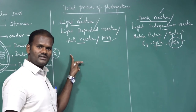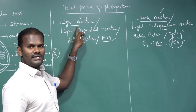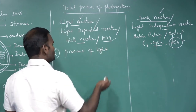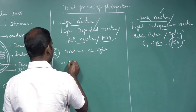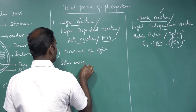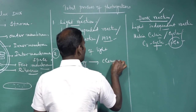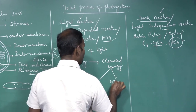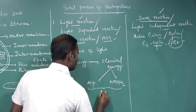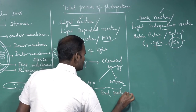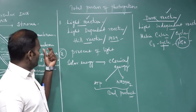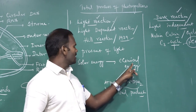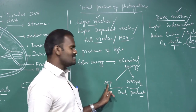The photosynthetic pigments in the light reaction absorb light energy and convert it into chemical energy. Solar energy is converted into chemical energy in the form of ATP and NADPH2. These are the end products of light reactions. The pigments present in the chloroplast trap the solar energy and convert it into chemical energy in the form of ATP and NADPH2.